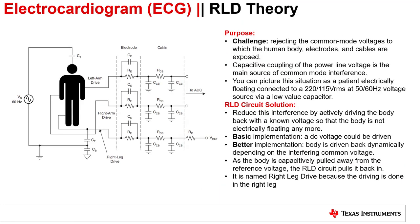In its basic implementation, a DC voltage could be driven, but the results are improved if the body is driven back dynamically depending on the interfering common voltage. This is done by constantly monitoring the changing common voltage the two electrodes are riding on top of. This voltage is mirrored around the reference voltage — usually half the supply — and driven back to the body. As the body is capacitively pulled away from the reference voltage, the RLD circuit pulls it back in. It is traditionally named right leg drive because the driving is done at the right leg.